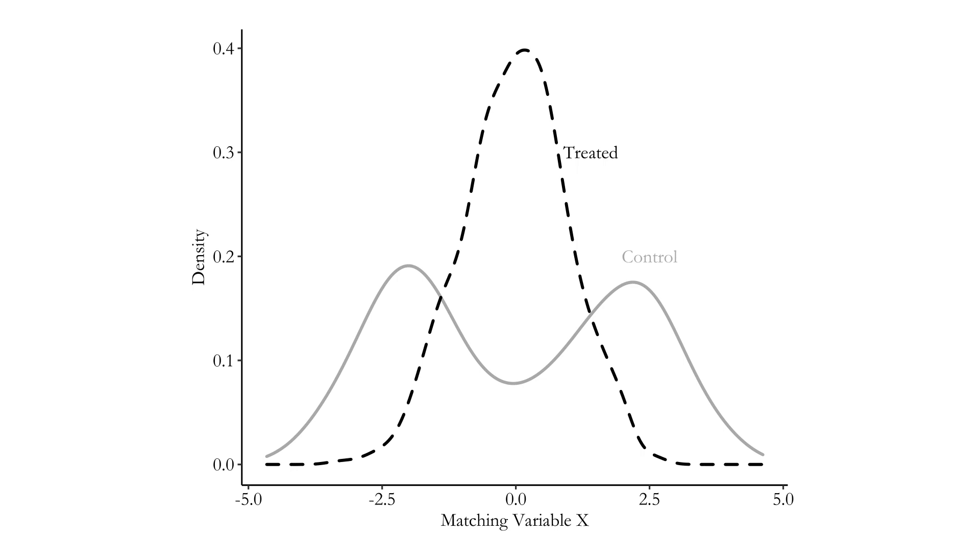To be clear, this balance table compares means of the matching variables, but that's not the only way to check balance. The mean might not be the only thing you're interested in. It's entirely possible to get the means of treated and control groups to be exactly the same, and yet the distributions still don't look quite the same. For example, maybe your treated and control groups after matching both have a mean of zero, so on a balance table that looks fine — but the distribution of the matching variable is still quite different.